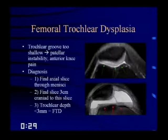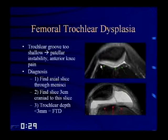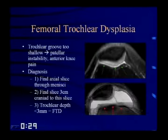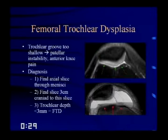Femoral trochlear dysplasia refers to when the trochlear groove becomes too shallow. When the groove becomes convex rather than concave, the patella easily slides back and forth, prone to dislocation. To diagnose: find the axial slice through the menisci, go up three centimeters, and measure the trochlear depth — it should be at least three millimeters. If less, or if there's frank convexity, suggest the possibility of femoral trochlear dysplasia. Be careful with older patients with osteophytes, as interpretation becomes tricky.